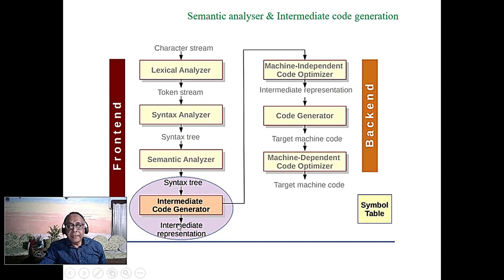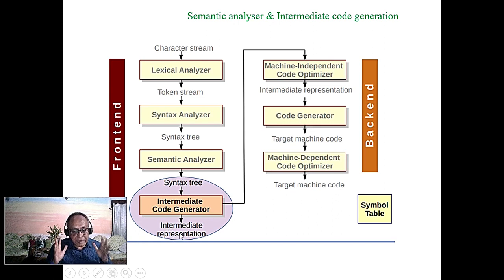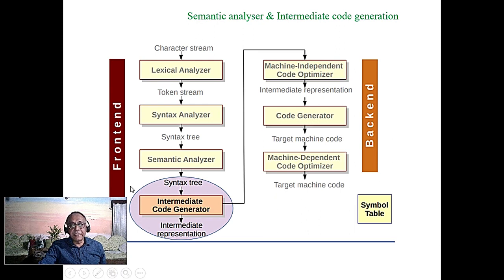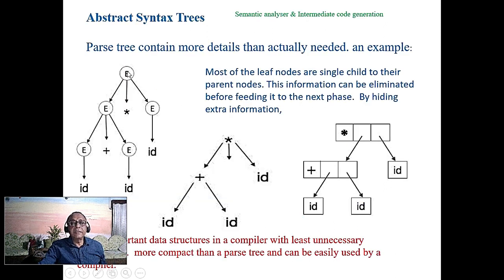We are at the stage of semantic analysis and intermediate code generation, also called intermediate representation. The intermediate representation forms include abstract syntax tree, postfix notation, and others. In a syntax tree there is a lot of redundant information; in the abstract syntax tree the operation goes to the node and variables come to the leaves, making it much more compact.